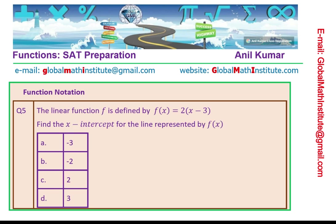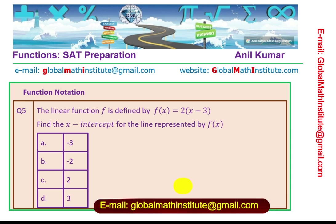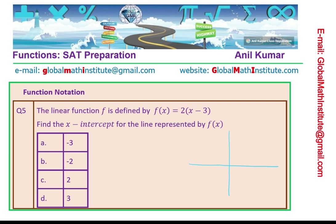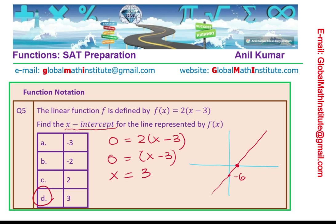Question number 5 — finding the x-intercept. The linear function f is defined by f of x equals 2 times x minus 3. Find the x-intercept for the line represented by f of x. The x-intercept is the point where the graph crosses the x-axis, meaning y is 0. The function is 2x minus 6. We substitute 0 for f of x and evaluate: dividing by 2 we get x minus 3 equals 0, so x equals 3. Option D is the right answer.